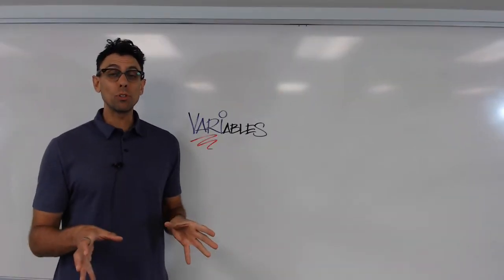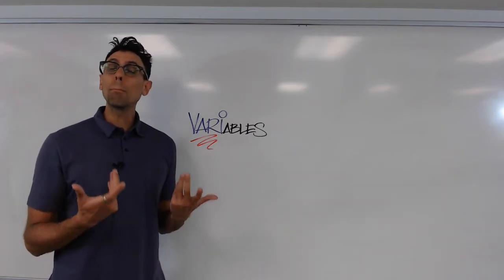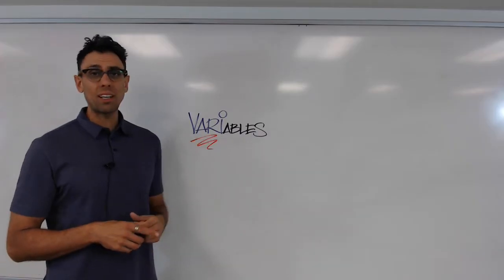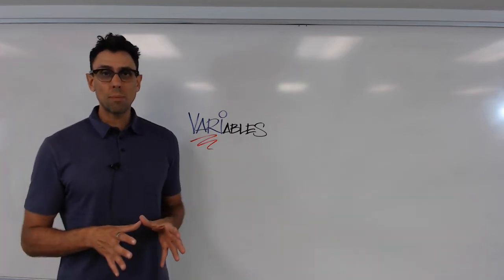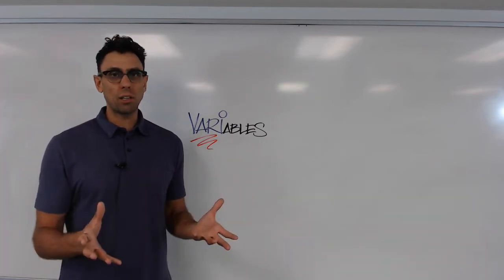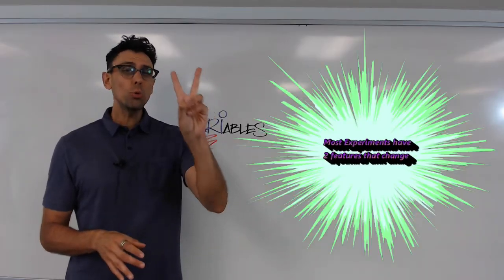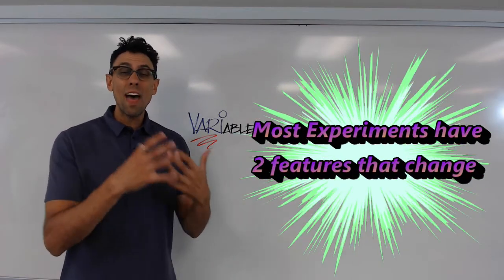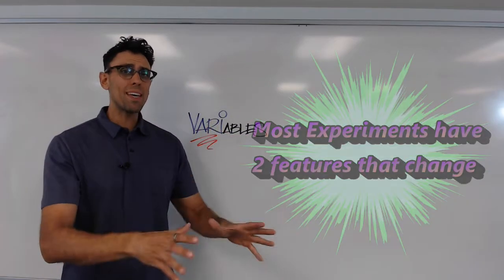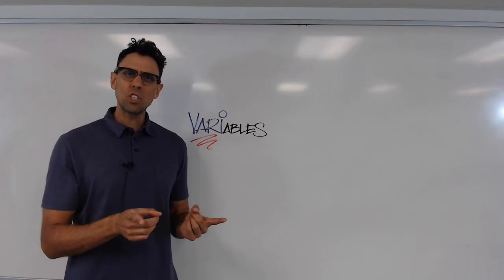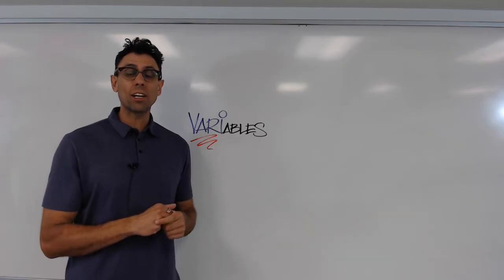When looking for variables in an experimental setup or description, it's best to remember what the word variable means. If we look at the word, we can see the root of it is 'vary,' which of course means to change. So in science experiments, there are going to be a lot of things that are not changing — a lot of things that are constant — but there will always be two standout features of the experiment that do change intentionally.